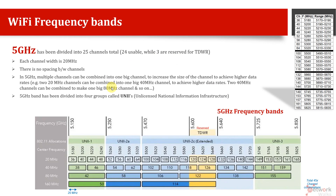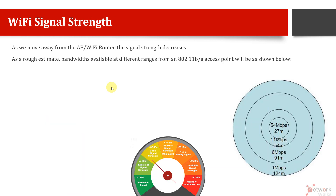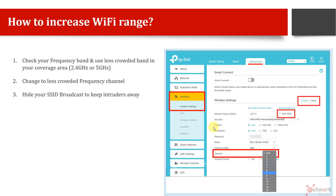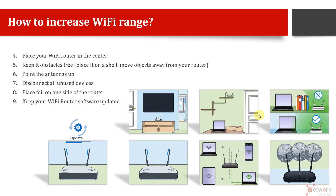So that is all about the 5 GHz frequency band. In the next videos, we will discuss Wi-Fi signal strength — how signal strength decreases as you move away from your Wi-Fi router, and some practical methods to increase the range, like if you are using a Wi-Fi router at home.